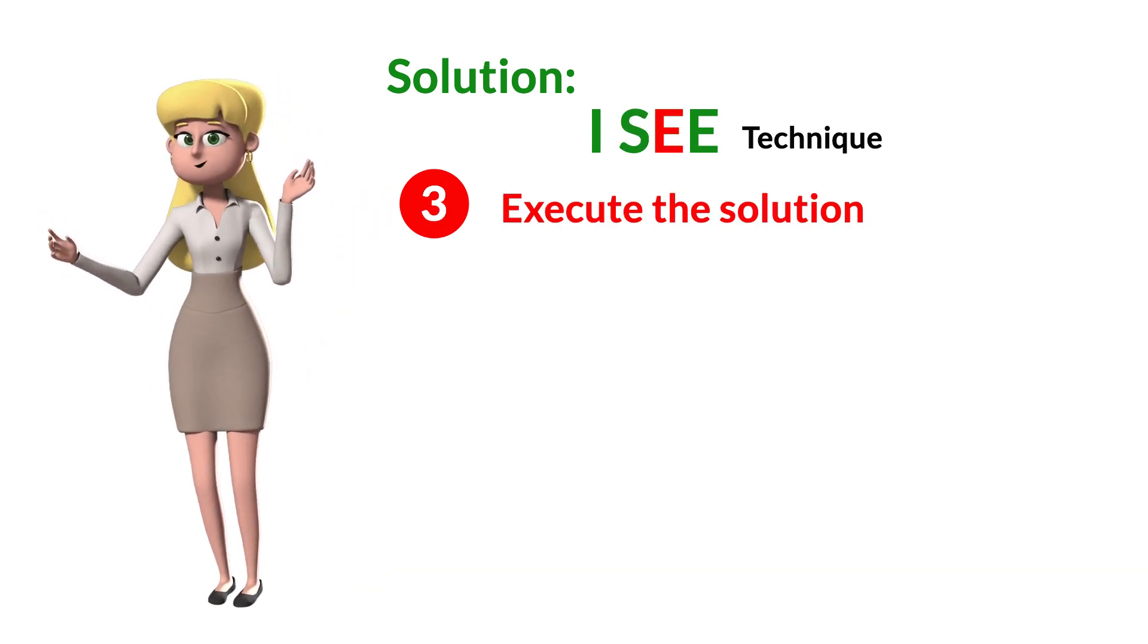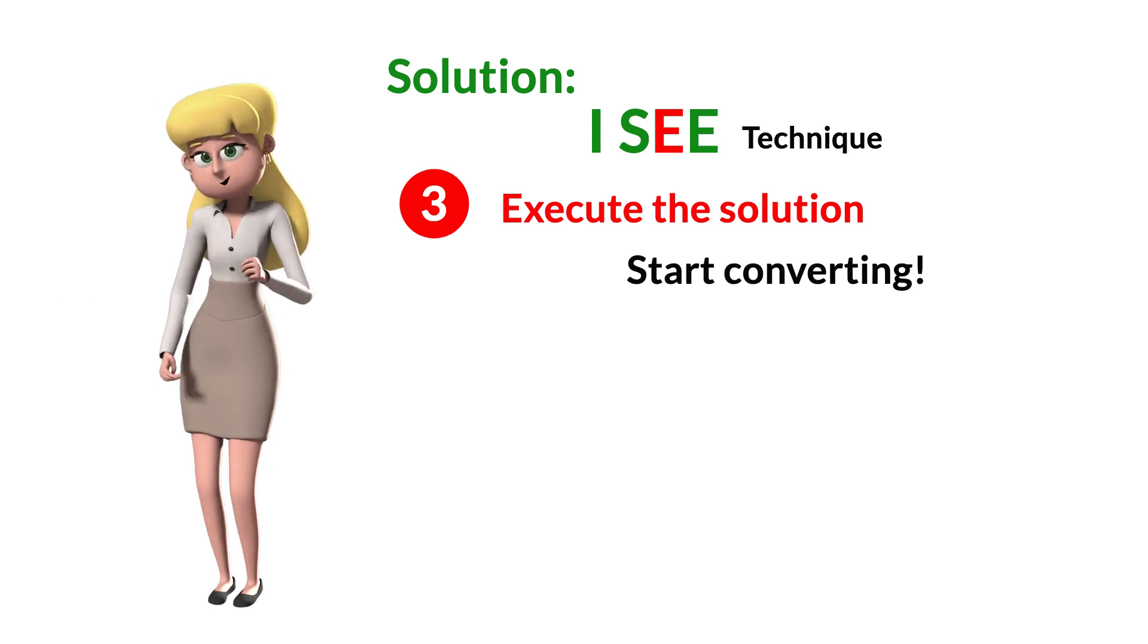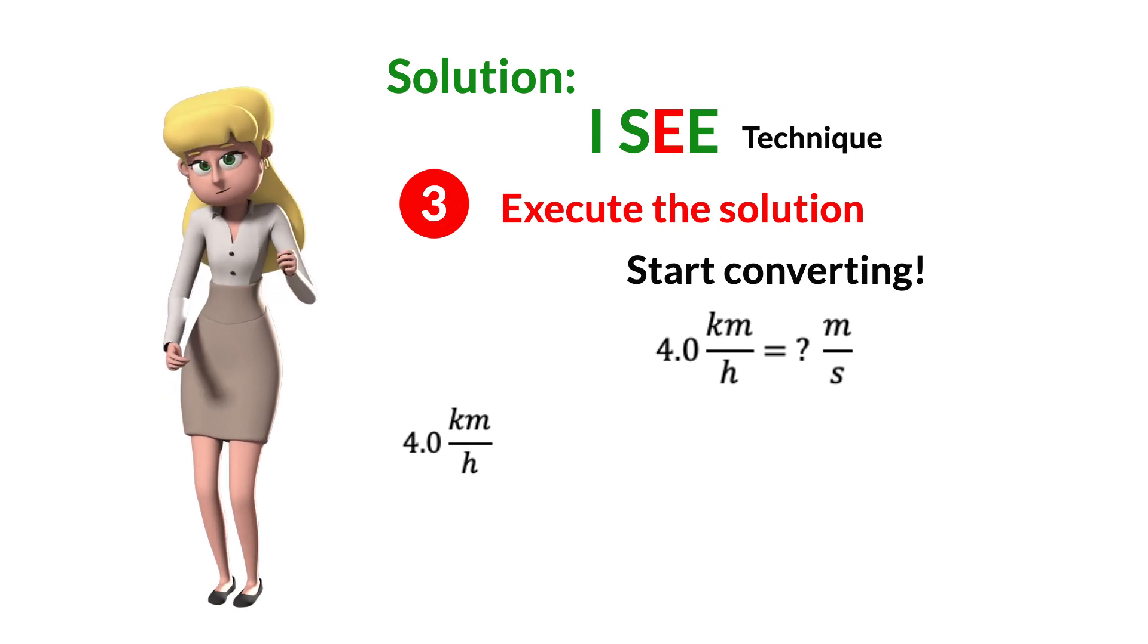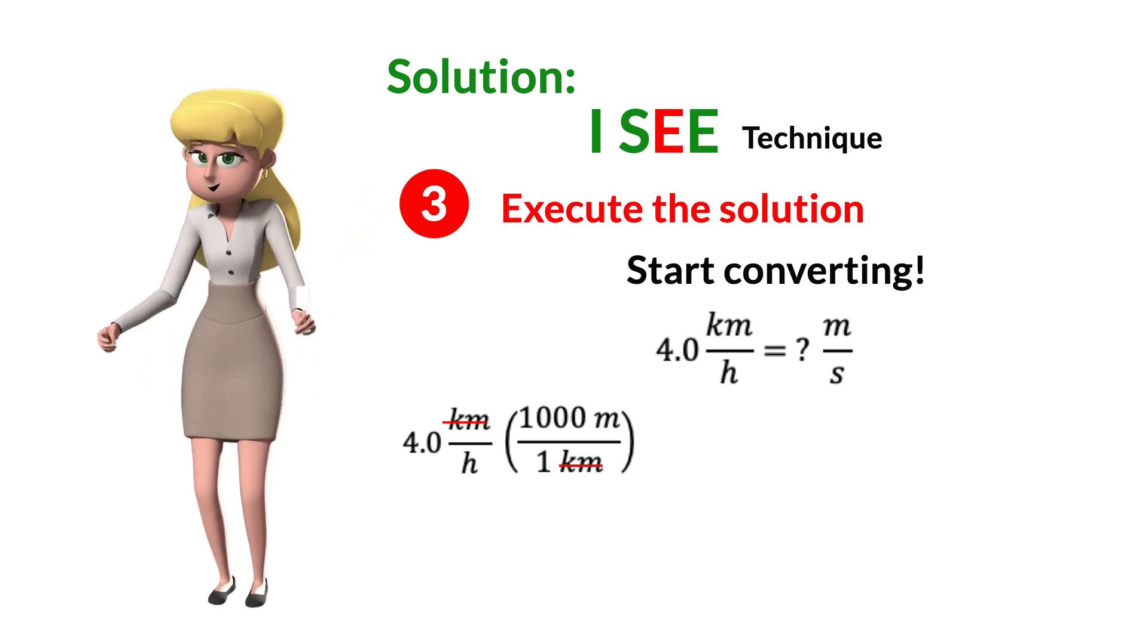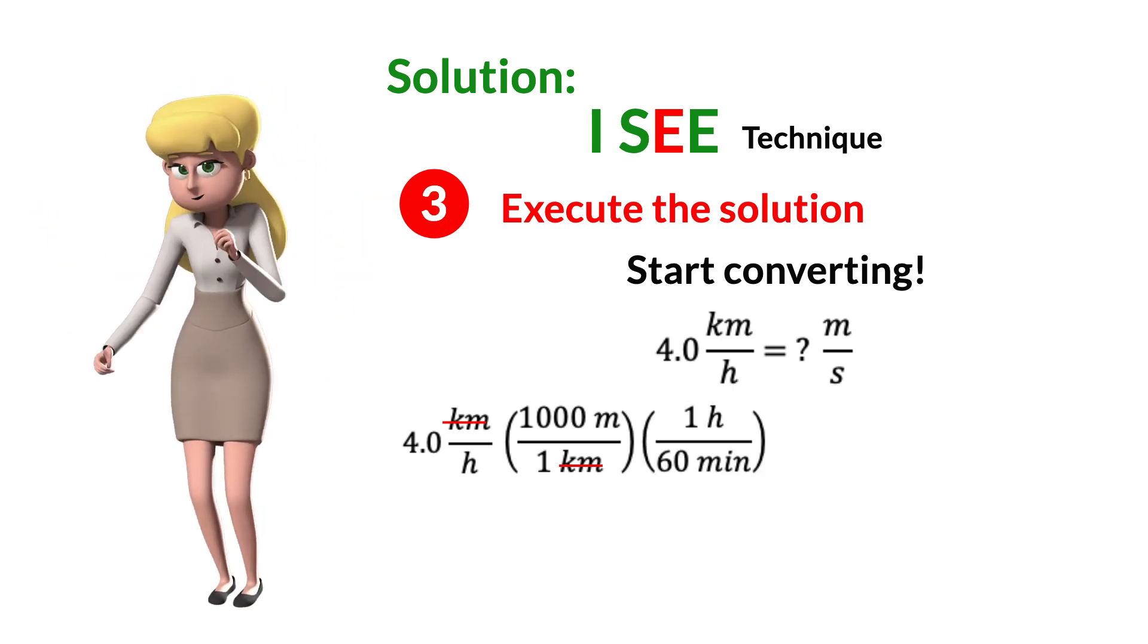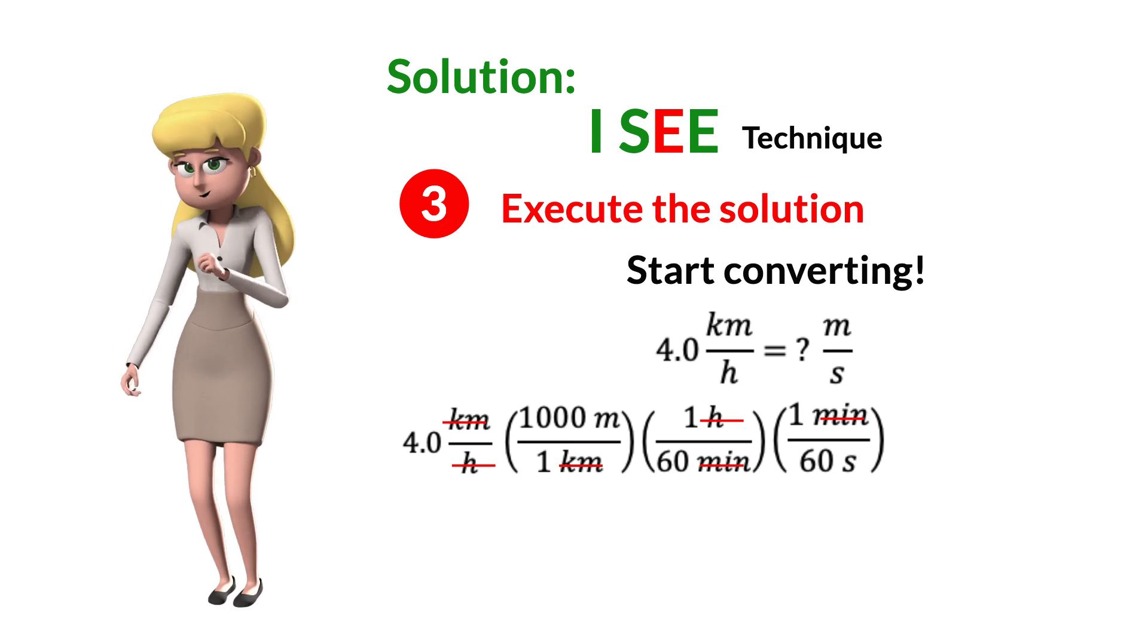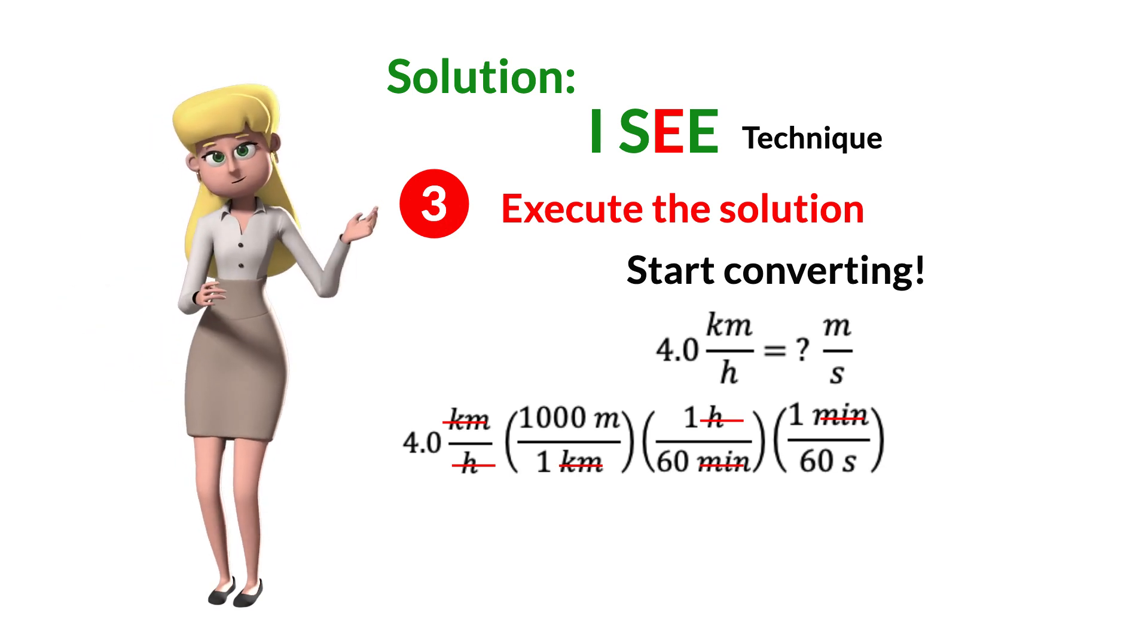Step number three: Execute the solution. Start converting. Remember that if the unit is located in the numerator, you must pair the same conversion unit in the denominator, and vice versa. So if we want to convert 4.0 kilometers per hour in terms of meter per second, we write first 4.0 kilometers per hour here. Then to cancel kilometer, we multiply this to 1000 meters over 1 kilometer. Since we already converted the numerator to meter, next thing to do is to convert the denominator into second. So we multiply them by 1 hour over 60 minutes. Then we cancel the hour units. And once again we multiply them by 1 minute over 60 seconds. Then cancel the minute, so that we are left with meter in the numerator and with second in the denominator. Converting 4.0 kilometers per hour in terms of meter per second, the answer is 1.1 meters per second.